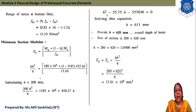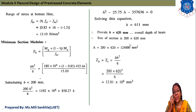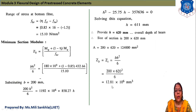Solving gives the quadratic equation: H² − 25.75H − 3,571,636 = 0. Solving, H = 611 mm, rounded to 620 mm. So the section is 200 × 620 mm, area = 200 × 620 = 124,000 mm². The actual section modulus Z_b = Z_t = B·H²/6 = 200 × 620²/6 = 12.81 × 10⁶ mm³.